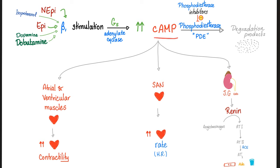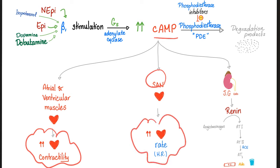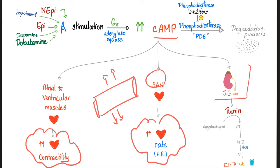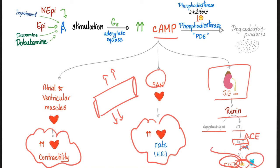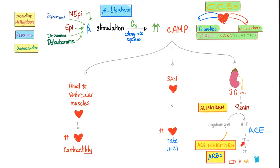Stimulate Gs → cyclic AMP. If you're talking about the heart, increased contractility. SA node: increased heart rate. Smooth muscles: dilation of bronchi and blood vessels. Juxtaglomerular cells: renin secretion → angiotensinogen → angiotensin I → angiotensin II by ACE → acts on AT1 receptor → vasoconstriction, increased aldosterone release, and thirst. Aldosterone reabsorbs sodium, secretes potassium and hydrogen — raising blood pressure.